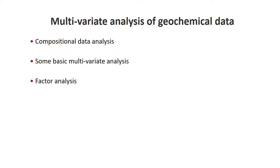Geochemical data is quite common in the geosciences, as we do many types of chemical analysis whether it's of rocks, fluids, or oceans. There are a number of things we have to be aware of. First of all, much of this geochemical data is compositional in nature, meaning there is some kind of a total being analyzed—whether it's a percentage or volumes. So there is a constant sum involved, and the type of statistical methods we will rely on are called compositional data analysis.